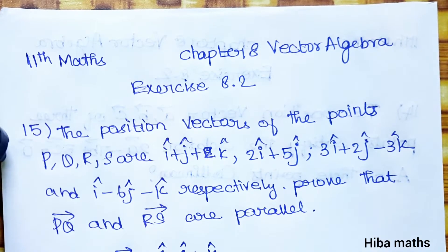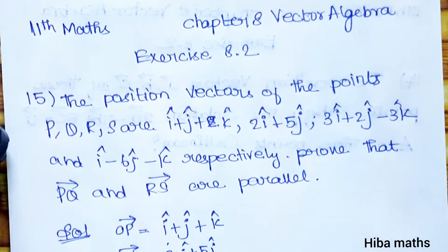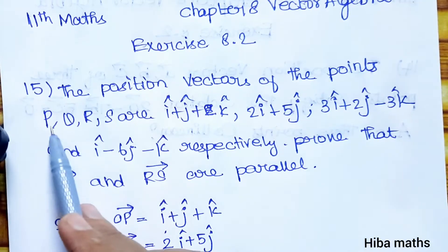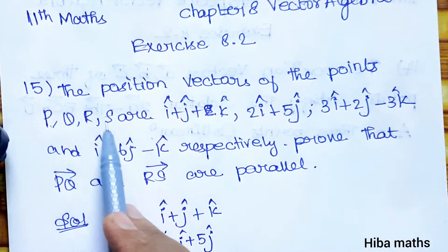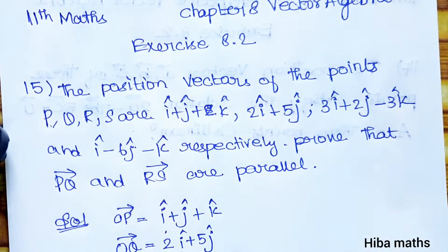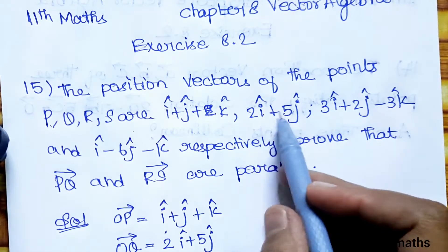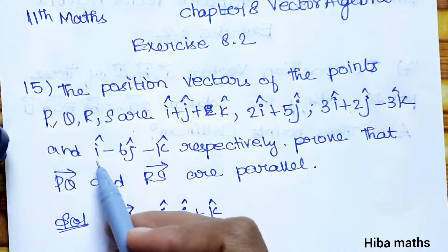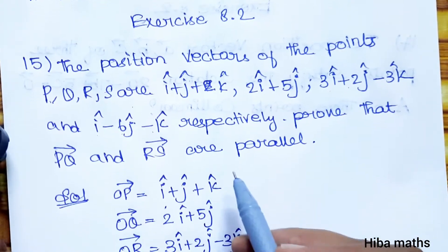Hello students, welcome to HEBA. This is Class 11 standard, Chapter 8 Vector Algebra, Exercise 8.2, Question 15. The position vectors of points P, Q, R, S are given as: i plus j plus k, 2i plus 5j, 3i plus 2j minus 3k, and i minus 6j minus k.